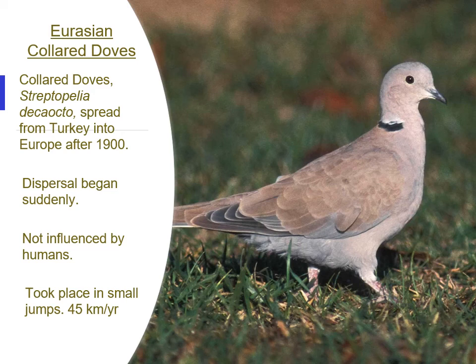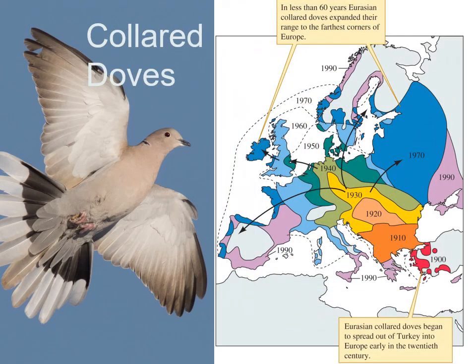These long-distance jumps mean the collared dove's dispersal rate is much higher than most species — about 45 kilometers a year. That's not as fast as the Africanized honeybee, which was spreading at 300 to 500 kilometers a year. Looking at the expansion across Europe, in 1900 they were just in Turkey; by 1940 they had jumped the English Channel into England; and by 1970 they had spread across all of Europe including Ireland — a fairly rapid spread at about 45 kilometers per year.